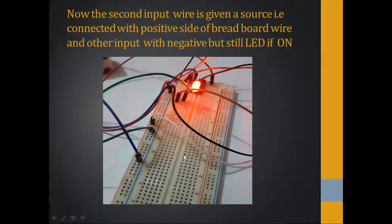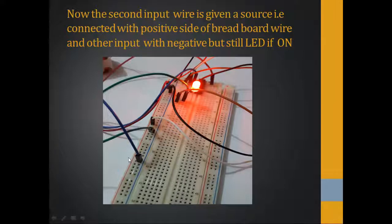Now moving to the third condition. The white wire represents the first input and the blue wire represents the second input. The white wire is connected with the positive side and the blue wire with the negative side of the breadboard, but still the LED is on — proving the third condition of the truth table: if one input is zero and the other is one, the LED turns on.